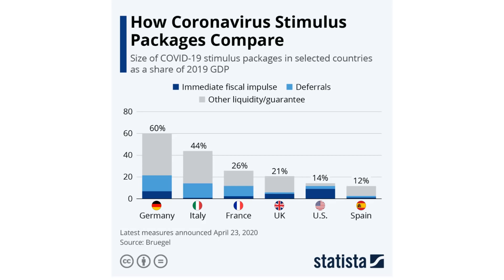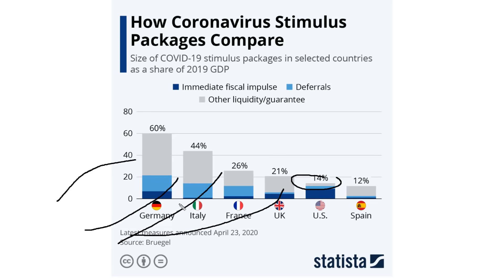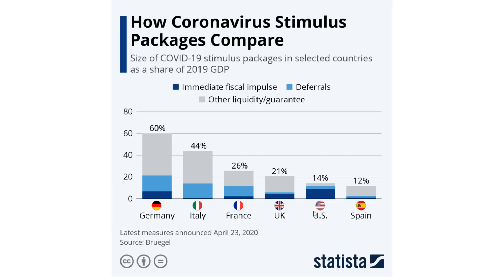The last one is other liquidity guarantees — things like export guarantees, liquidity assistance, and credit lines through national development banks to improve the liquidity position of the private sector. Unlike deferrals which are automatic and generally apply to target groups, credit lines require action from the impacted companies. So they may not weaken the budget now but they might weaken it later. This is what Germany, Italy, France, and the UK have chosen to do in a much greater part than the US.